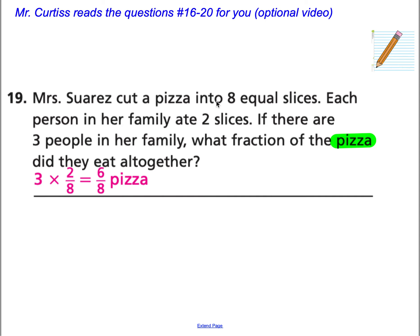Mrs. Suarez cuts a pizza into 8 equal slices. Each person in her family ate 2 slices. If there are 3 people in her family, what fraction of the pizza did they eat all together? By reading this, it tells me that Mrs. Suarez is already included in her family. So yeah, the whole number is just 3. Her and maybe her husband and a child or there's just three of them. Now they ate 2 slices, but they ate 2 slices of what? Yeah, they ate 2 slices of 8. Two eighths.